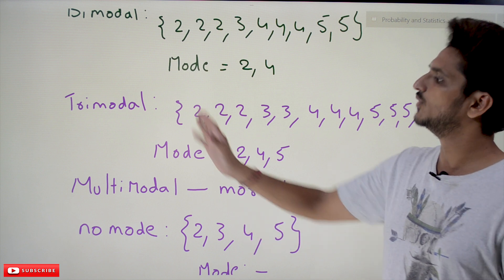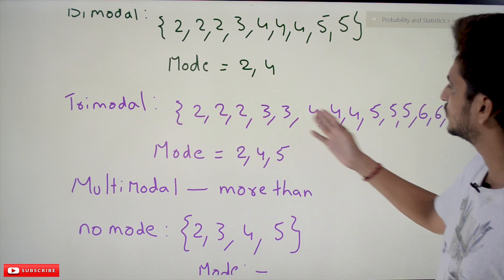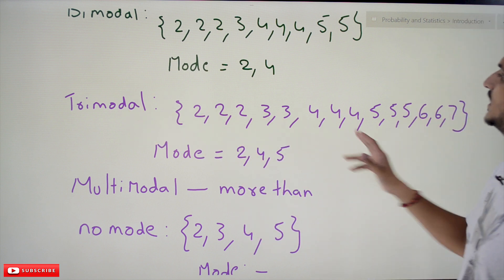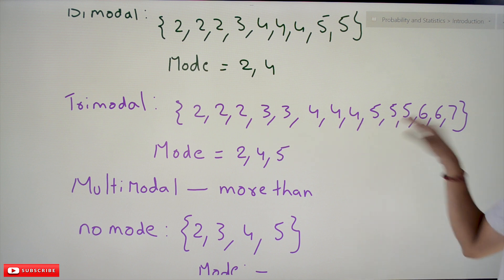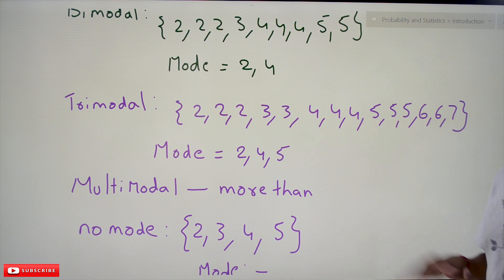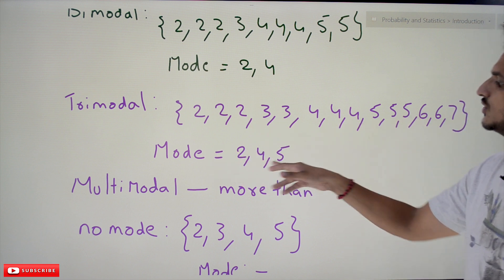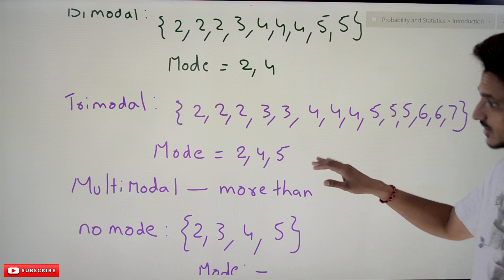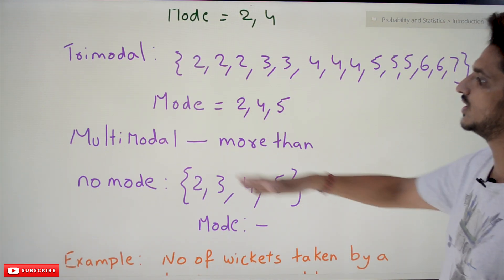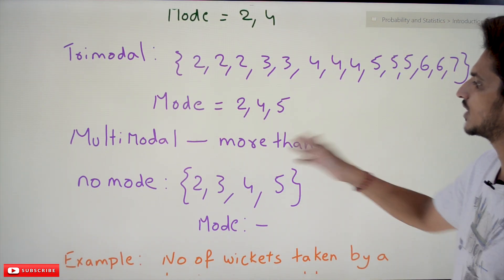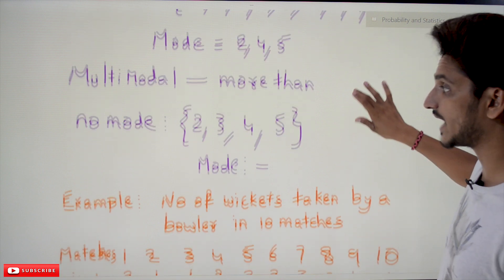Similarly, if you are having three mode values, we call it trimodal. For example, if 2 occurs three times, 4 occurs three times, and 5 occurs three times, then mode = 2, 4, 5. If you are having more than three mode values, then we call it multimodal.